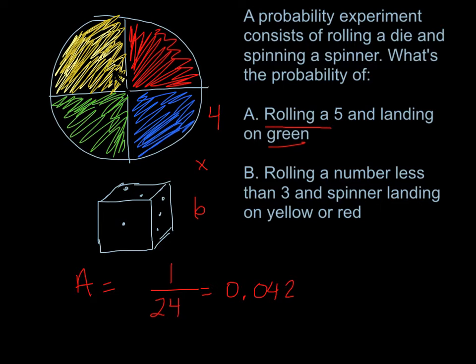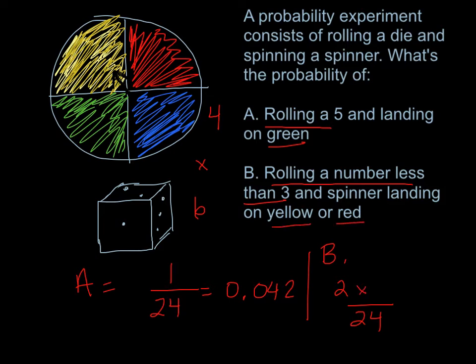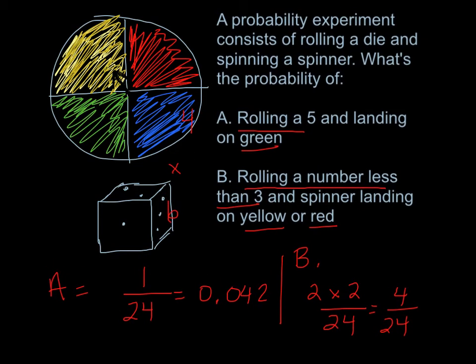Now Part B: rolling a number less than three and landing on yellow or red. My denominator is still 24 total possible outcomes. But now there are two possible outcomes on the first event — rolling a number less than three includes one and two, since three is not less than three. Landing on yellow or red gives two possible ways. So there are four different scenarios out of 24, giving a final answer of 0.167.